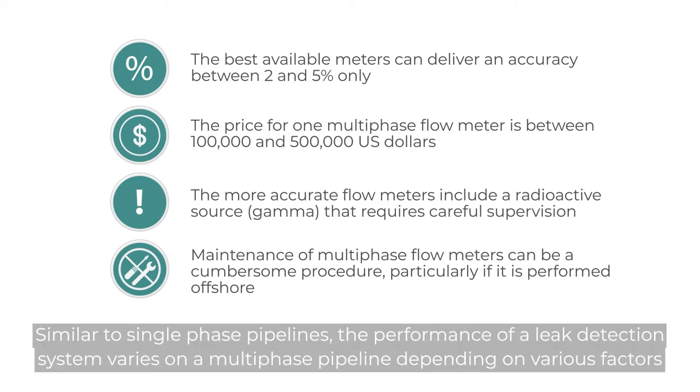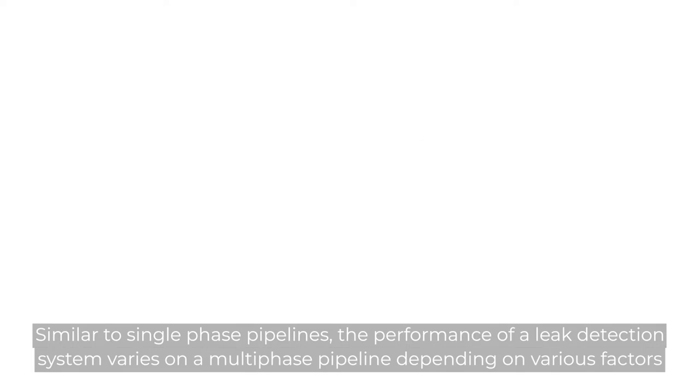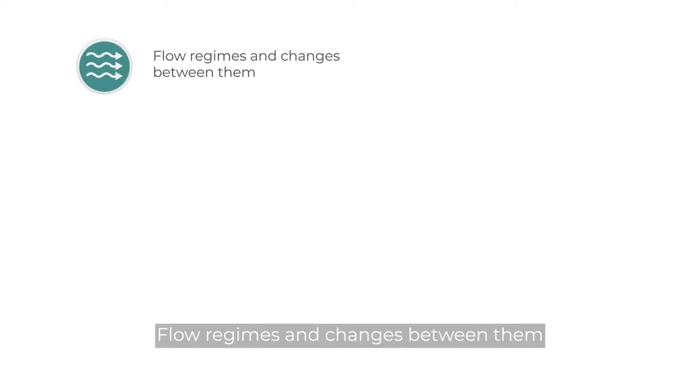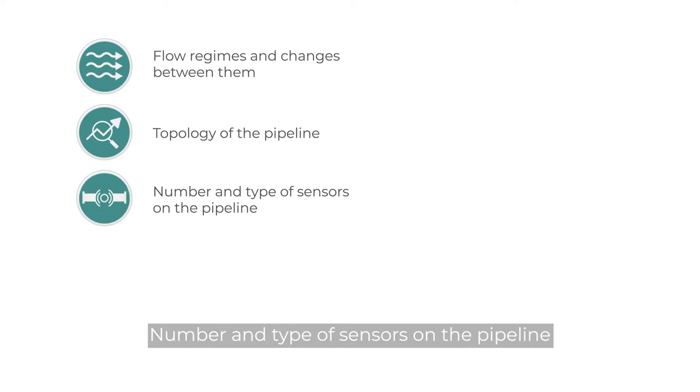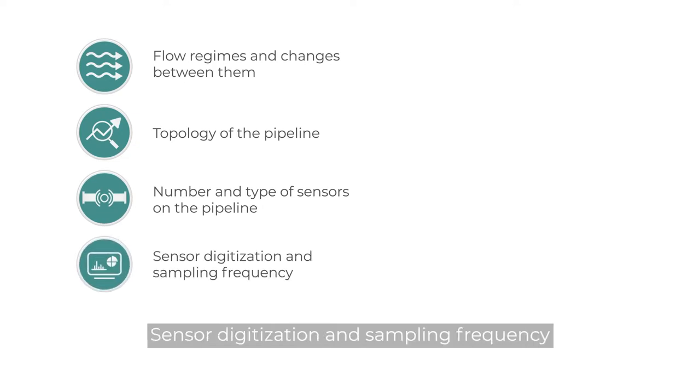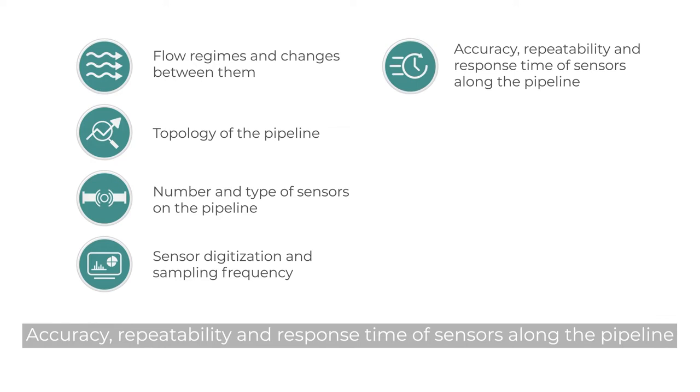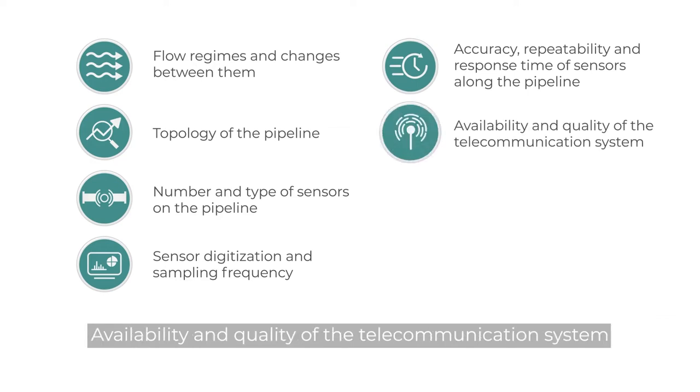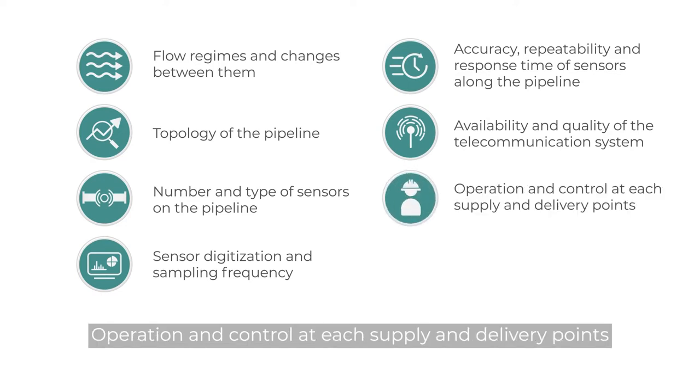Similar to single-phase pipelines, the performance of a leak detection system varies on a multi-phase pipeline depending on various factors: flow regimes and changes between them, topology of the pipeline, number and type of sensors, sensor digitization and sampling frequency, accuracy and repeatability and response time of sensors, availability and quality of the telecommunication system, and operation and control at each supply and delivery point.